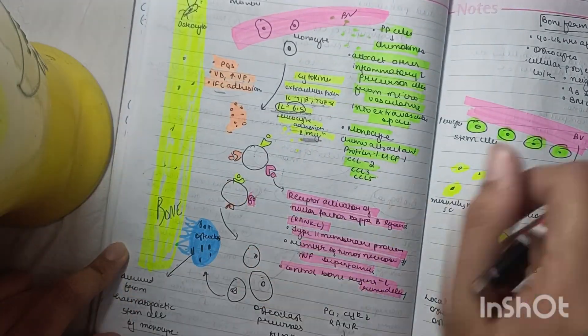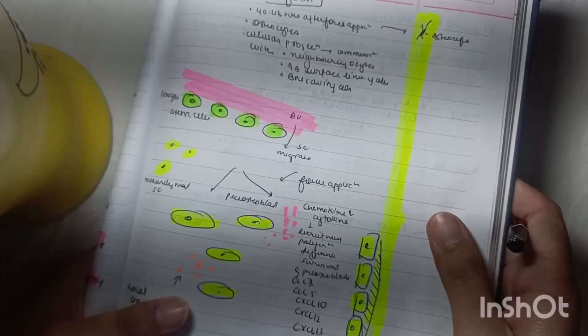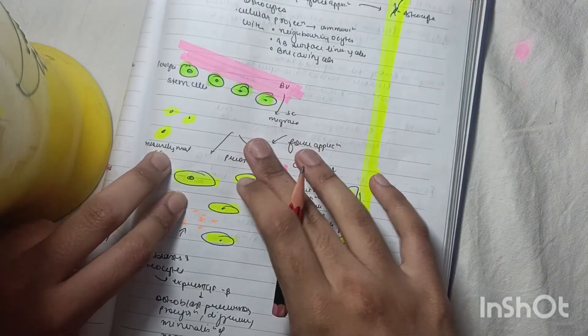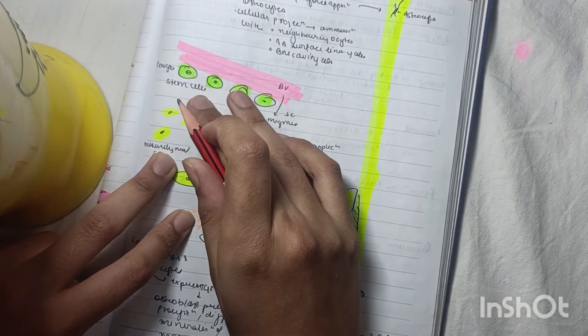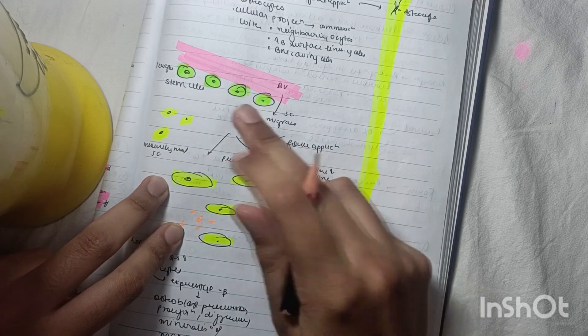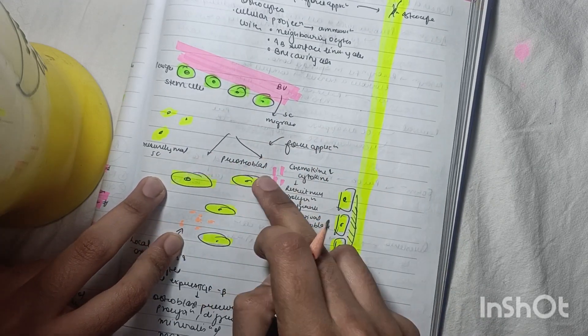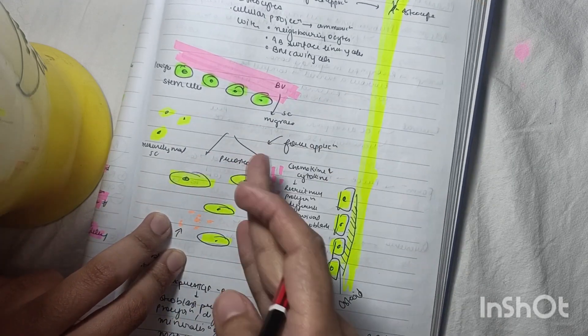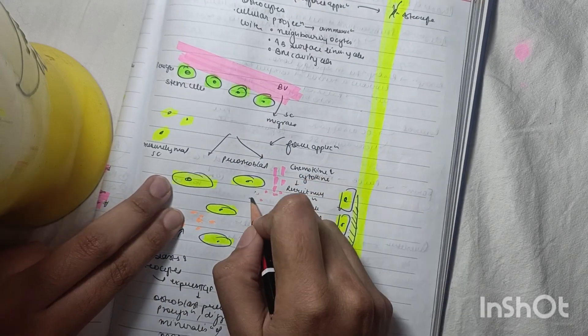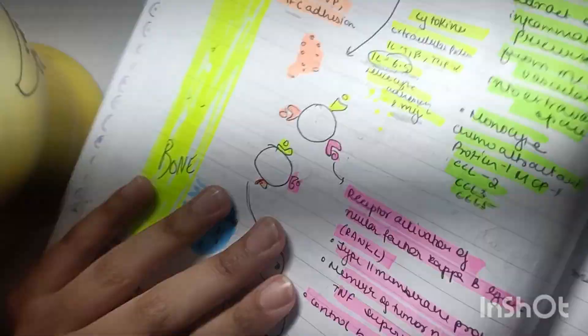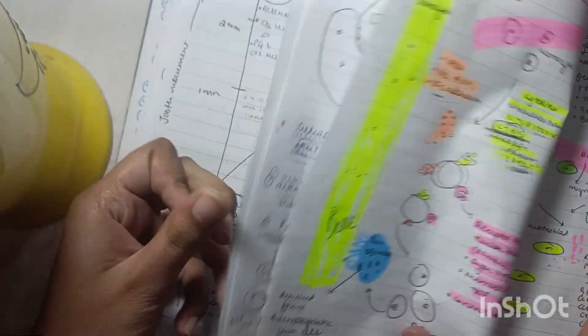Coming to the tension side, we have blood vessels, stem cells, and mesenchymal stem cells. On application of force, they differentiate into pre-osteoblasts. These pre-osteoblasts have many stages.